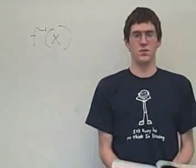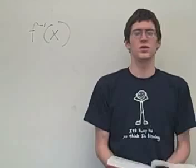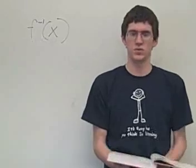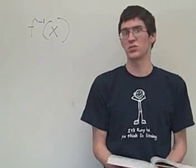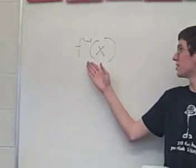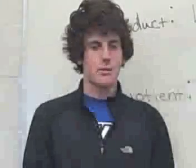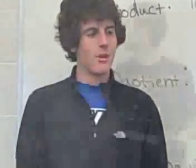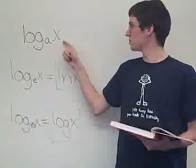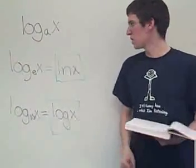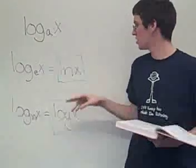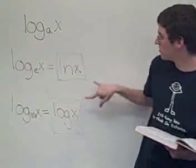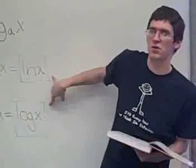Another important idea to know is inverses. To get an inverse, it's real simple — you just swap the x and y data points in a set of data, or in a function swap the y and x variables, and then solve for what y equals in terms of x. It is denoted by this. A very important inverse to know is the logarithm, which is the inverse of an exponential function, denoted by log base a of x. Two very important logarithms to know are the logarithm with base e, denoted as ln of x, or the logarithm with base 10, denoted as log of x. These two are what will appear on your calculator and are very important to know.